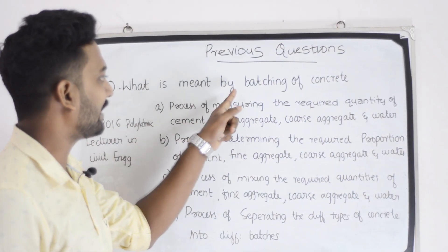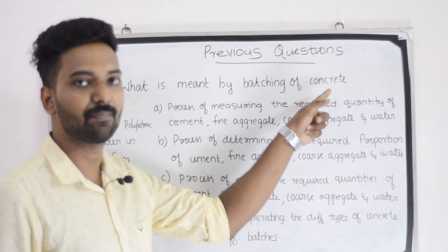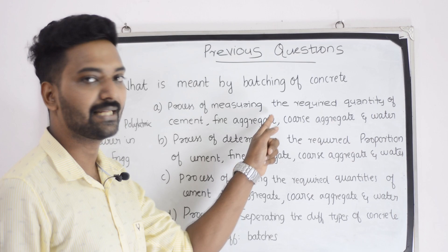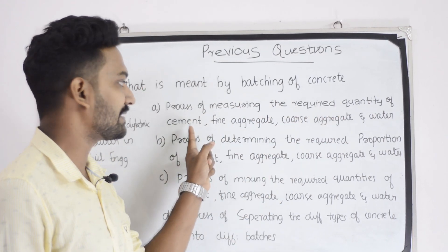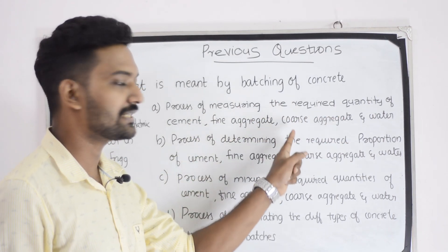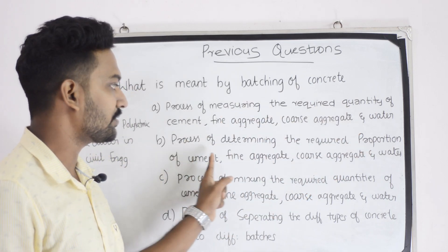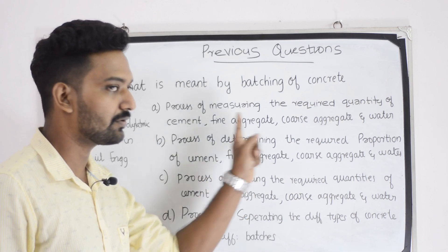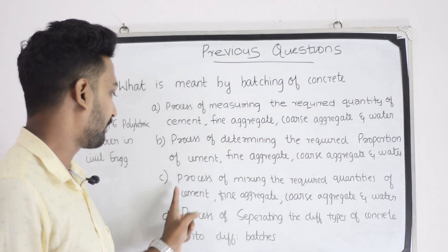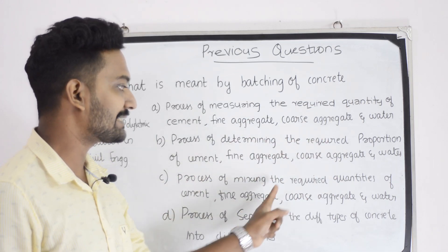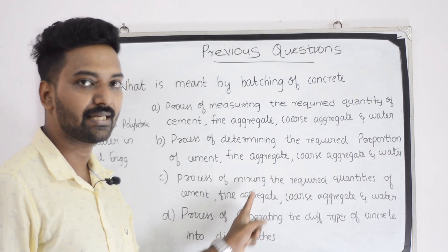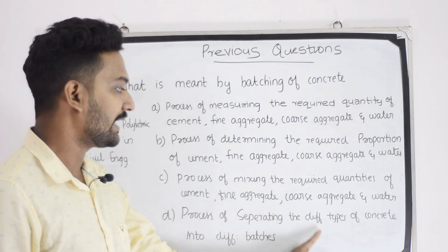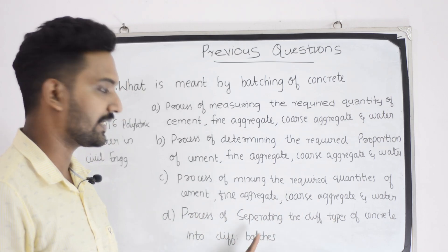What is the meaning of the batching of concrete? The first option is the process of measuring the required quantity of cement, fine aggregate, coarse aggregate and water. Second option, process of determining the required portion of cement, fine aggregate, coarse aggregate and water. Third option, process of mixing the required quantities of cement, fine aggregate, coarse aggregate and water. Fourth option, process of separating the different types of concrete into different batches.